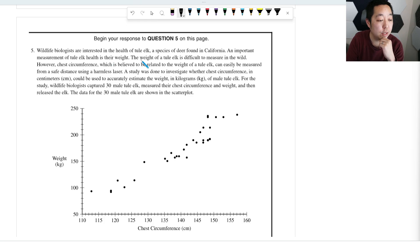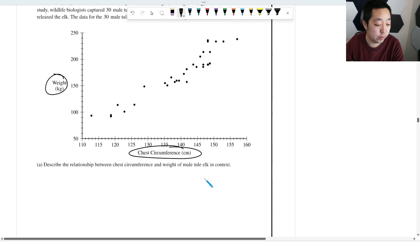So wild biologists are interested in the health of a tule elk, a species of deer found in California. Important measurement is their weight. The weight of the tule elk is difficult to measure. However, chest circumference, which is believed to be related to weight of the tule elk, can be measured from a safe distance using a harmless laser. A study was done to investigate whether the chest circumference could be used to accurately estimate the weight. For the study, wild biologists captured 30 male elk, measured their chest circumference and weight, and then released the elk. The data for the 30 male tule elk are shown in the scatter plot. Describe the relationship between chest circumference and weight.